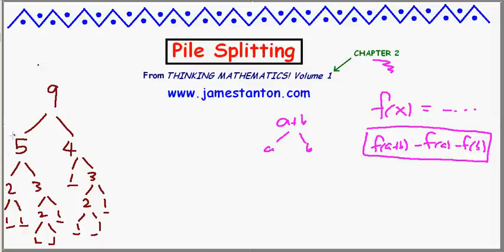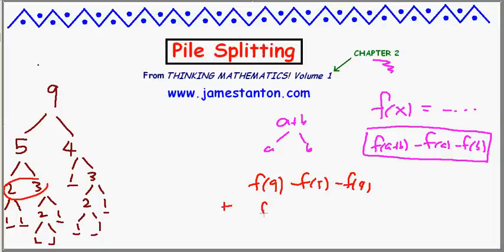Let's go back to my particular puzzle. I started with 9 and split into 5 and 4, so I write f(9) minus f(5) minus f(4). Then I split 5 into 2 and 3, so I add f(5) minus f(2) minus f(3). The nice thing is that the 5 was used as a pile and then split, so the f(5) terms cancel.